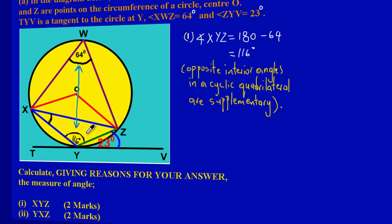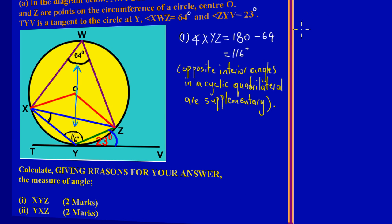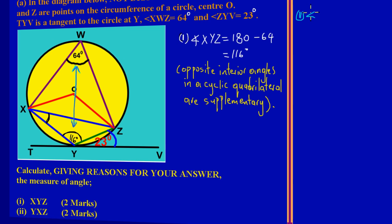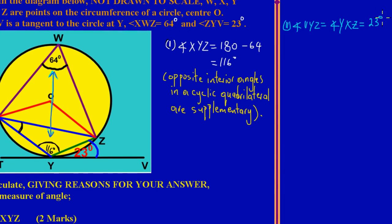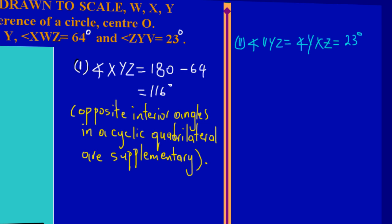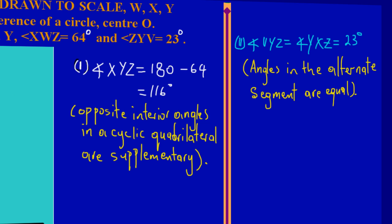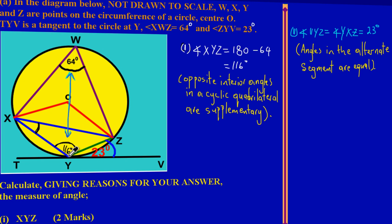For part 2, we can see that angle VYZ, which is outside the circle, is equal to angle YXZ — the angle we're trying to find — which is equal to 23 degrees, because those two angles are equal. The theorem is: angles in the alternate segment are equal. Any angle formed between a chord and a tangent outside the circle equals the angle subtended by that same chord in the alternate segment.